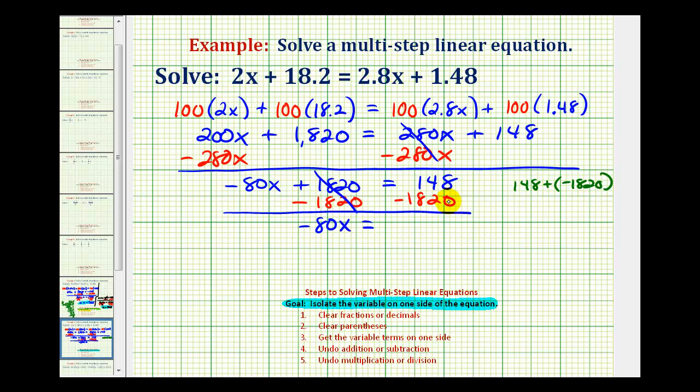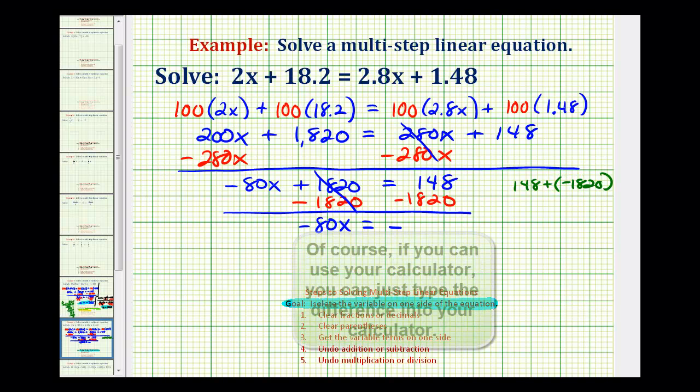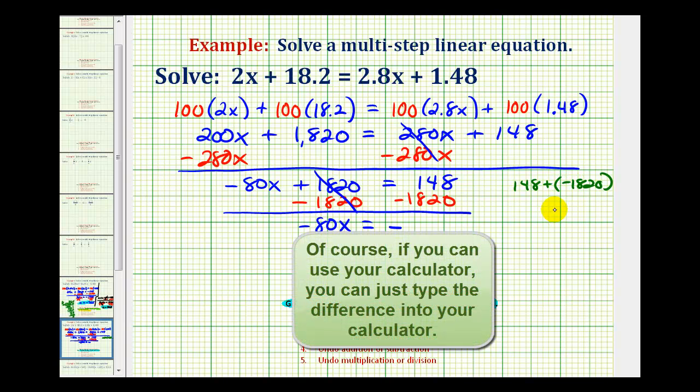So this sum, which is the same as this difference, is going to be negative. And now we'll just subtract their absolute values. And we always subtract the smaller absolute value from the larger absolute value. So we'll have positive 1820 as the absolute value of this negative number. And then we'll subtract the absolute value of 148, which is 148.